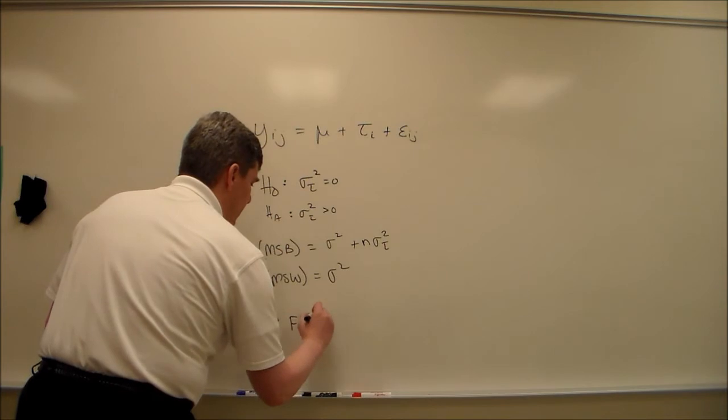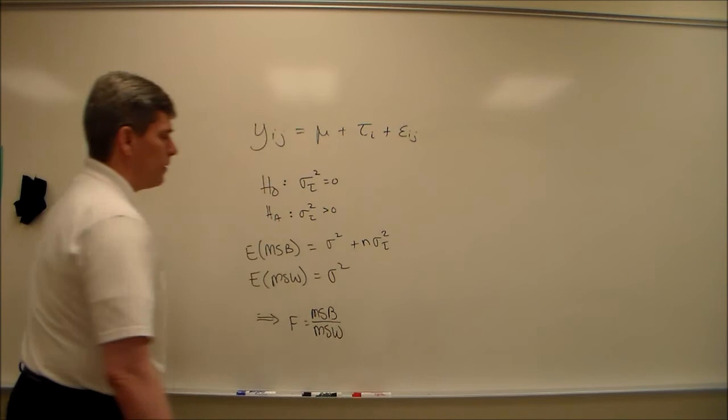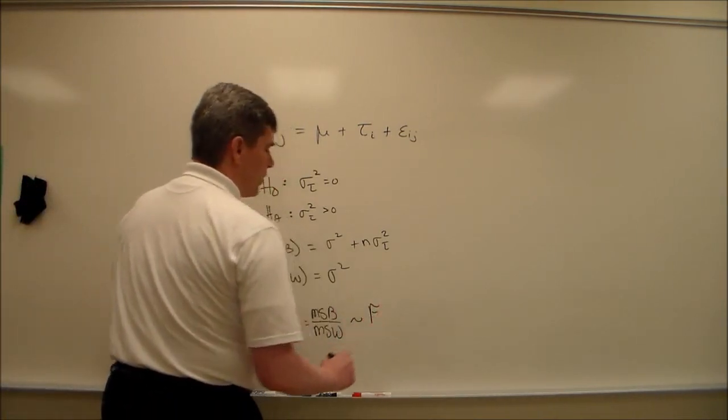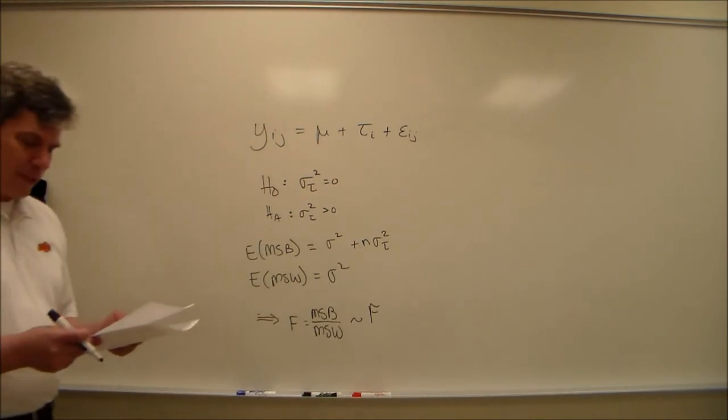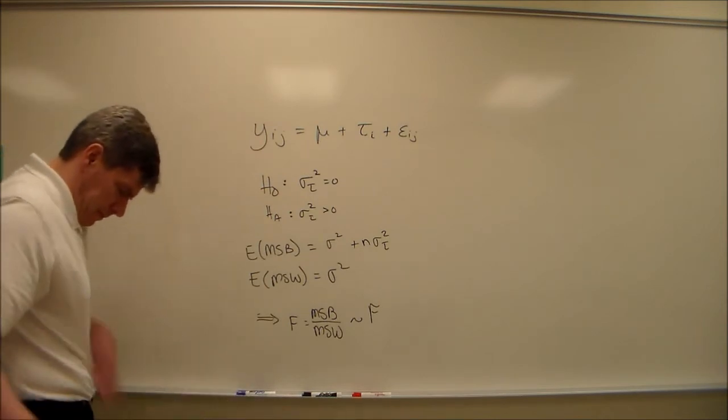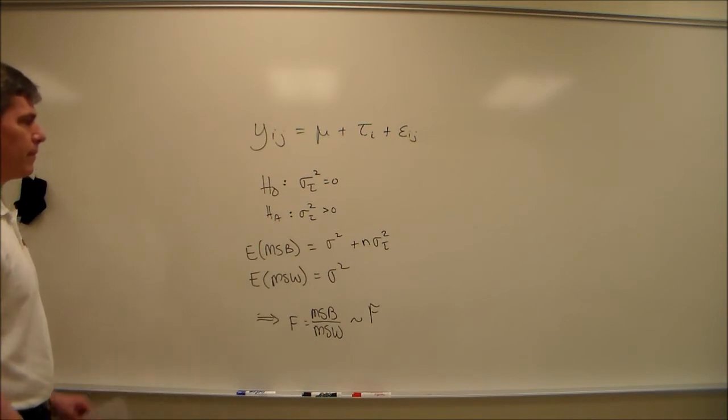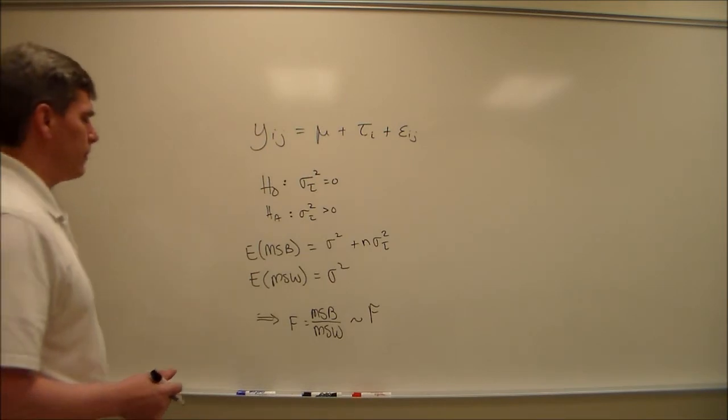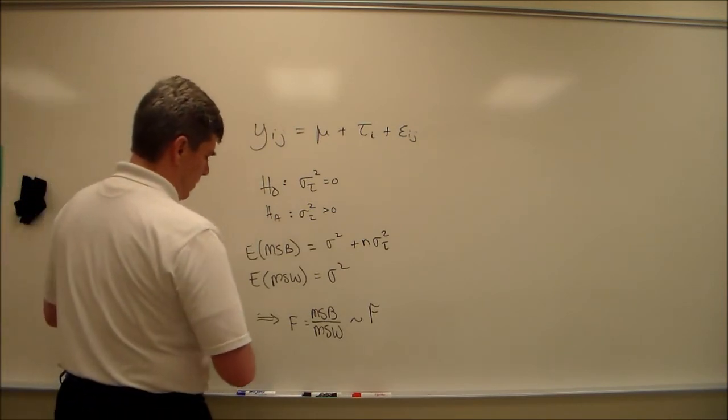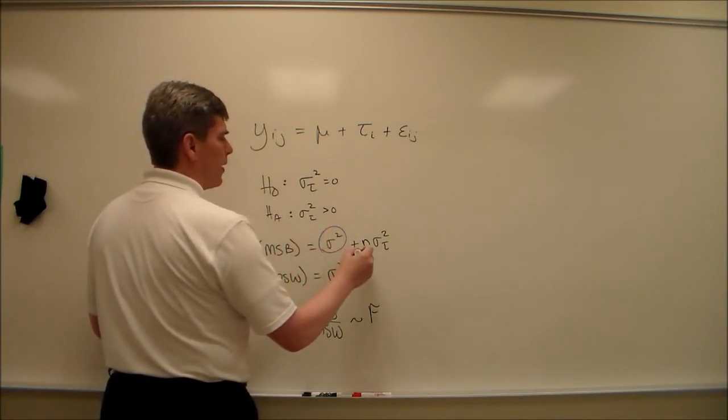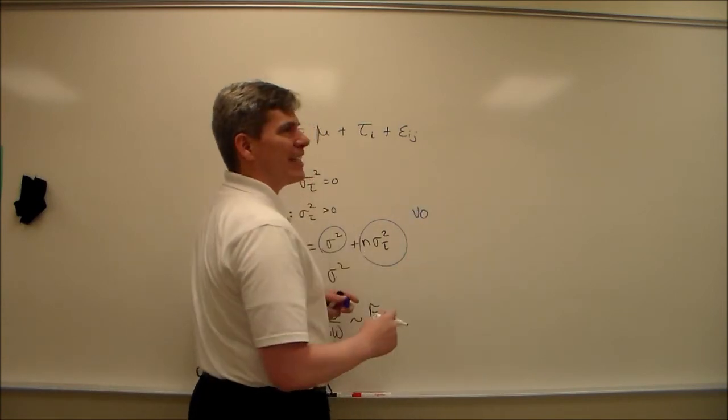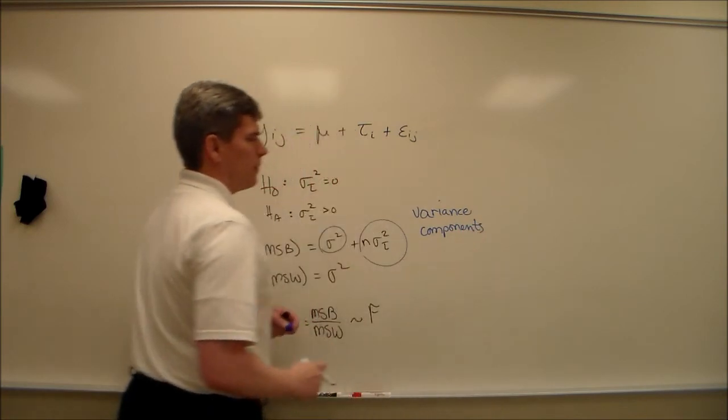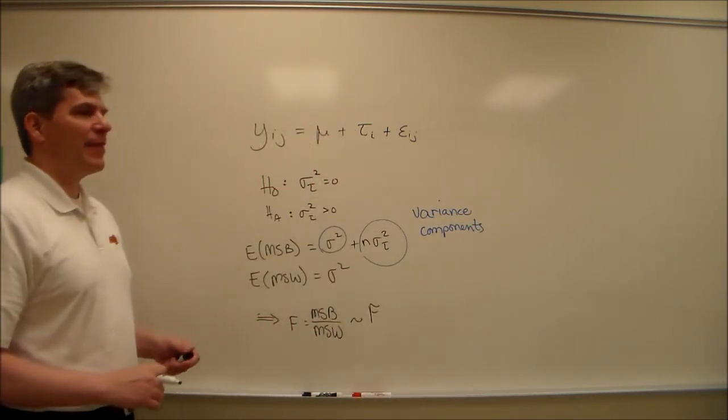And this will follow the typical F distribution, numerator degrees of freedom, denominator degrees of freedom, as you would expect. Some terminology. The sigma squared and the n sigma squared tau are called variance components. And as statisticians, if they exist in the estimate, then we're going to want to estimate them eventually.